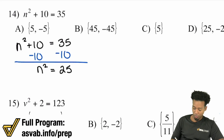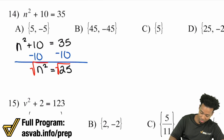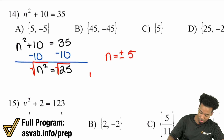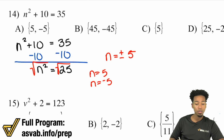To solve n squared equals 25, take the square root of both sides and we get n equals plus or minus five. That means n equals five and n equals negative five — both of those work, and that would be answer A.